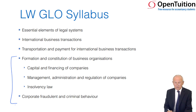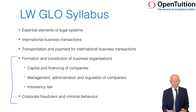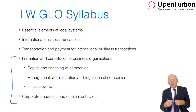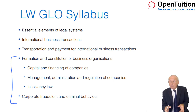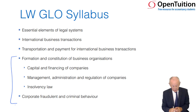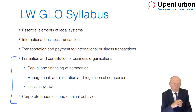Formation and constitution of business organisations is subdivided into three. First, we have capital and financing: are we going to put our own money in, borrow from a bank or from the public, or issue shares? And if we're going to issue shares, what sort? All of this is covered in lectures and in the course notes. Then management, administration, and the regulation of companies.